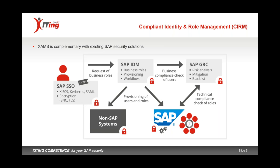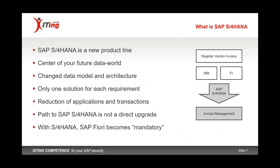Before we go into more detail about what XMS does for Fiori, I want to spend a few minutes on S/4HANA for those who are new to this. S/4HANA is a new product line from SAP — it will be the center of the future data world, and every customer running ECC/ERP today will sooner or later have to upgrade to S/4. With S/4, SAP tries to do a simplification, which results in a reduction of applications and transactions — for one requirement, SAP only offers one solution.